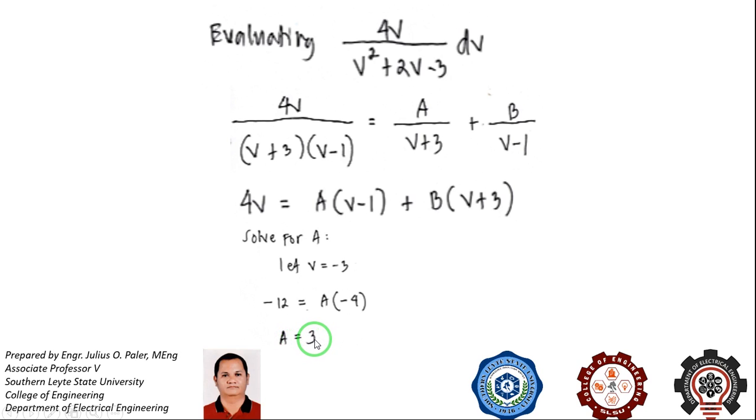Next, if we solve for coefficient b, we eliminate a by letting v equal to 1. As we substitute v = 1 to this equation, then 4v becomes 4 and a(v - 1) will be 0, and (v + 3) will be 4b, which gives us b equal to 1. So we now have solved the coefficients a and b.